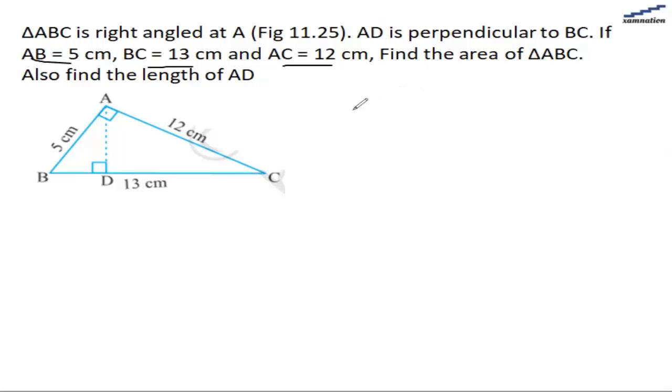We need to find the area of the triangle first. The area of the triangle will be half base into height. Here we will take the base as 5 and the height as 12 because they are at 90 degrees. That will come out to be 30 cm². So the area of triangle ABC will be 30 cm².